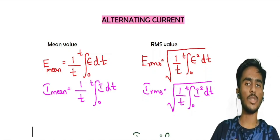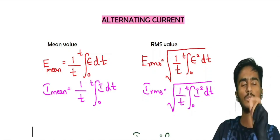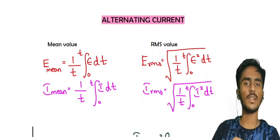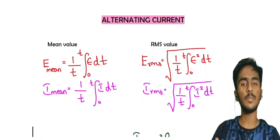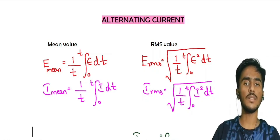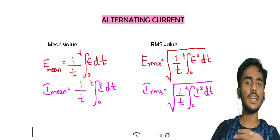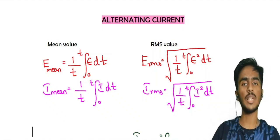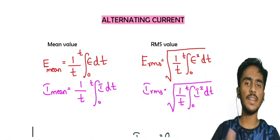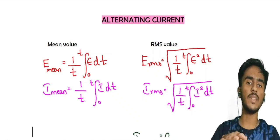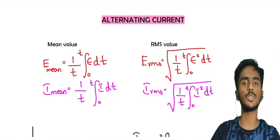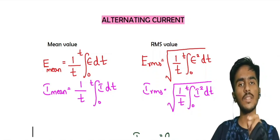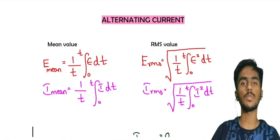Alternating current — you should normally start with direct current. With alternating current, the current changes with time. Sometimes it's positive, sometimes it's negative. So alternating current changes direction regularly. That's why we distinguish it from direct current.